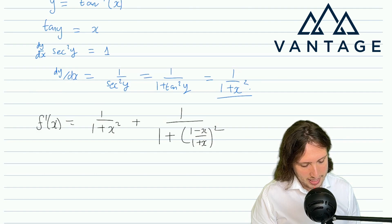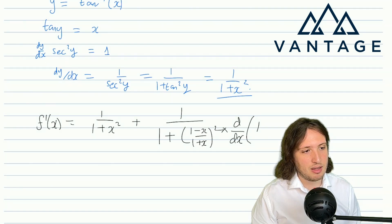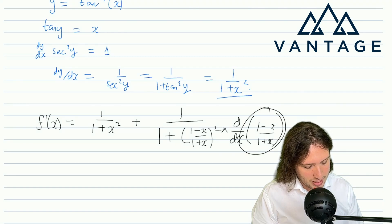So we're going to get 1/(1 + (1-x)/(1+x))² times the derivative of (1-x)/(1+x). So this is coming from the chain rule.